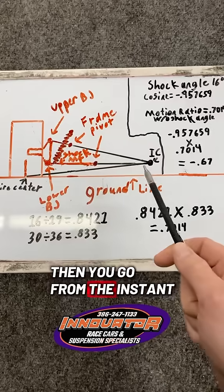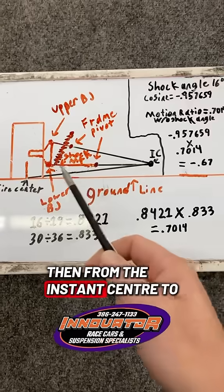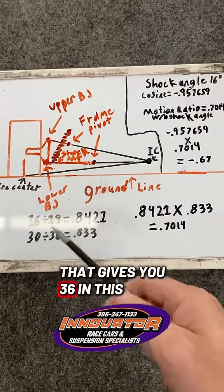Then you go from the instant center to the ball joint. That gives you 30 inches. And then from the instant center to the tire center, that gives you 36 in this example.